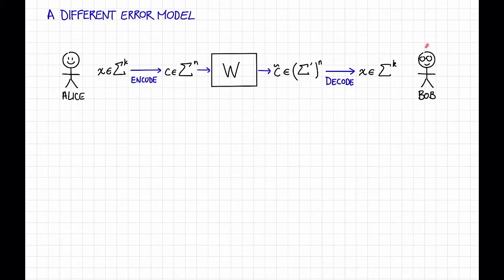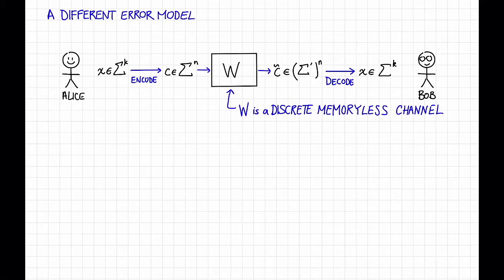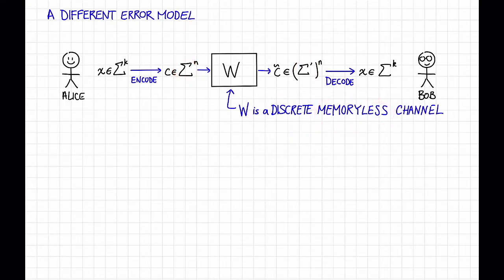Our receiver, Bob, receives that corrupted codeword and can hopefully decode it to recover Alice's message x. Here, this box w is a discrete memoryless channel. What the discrete part means is that these two alphabets — the input alphabet and the output alphabet — are finite. And what the memoryless means is that w corrupts each symbol in this codeword independently from all of the other symbols.